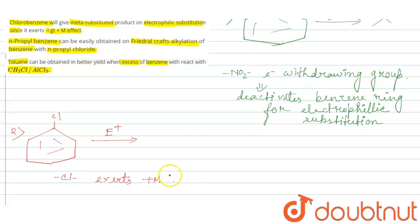But actually what happens here is chlorine exerts plus M greater than minus I. That is, though it withdraws some electron density through inductive effect, it donates its electron pair through mesomeric effect.